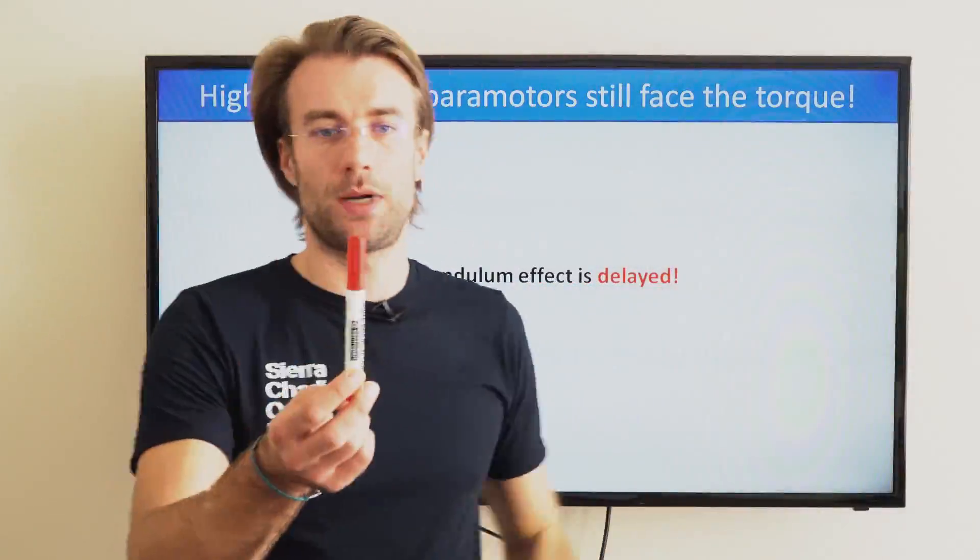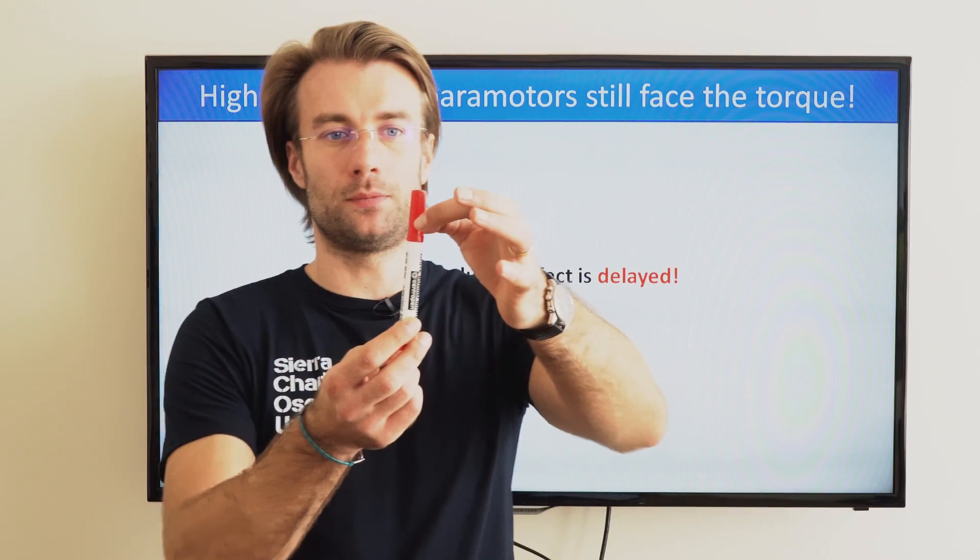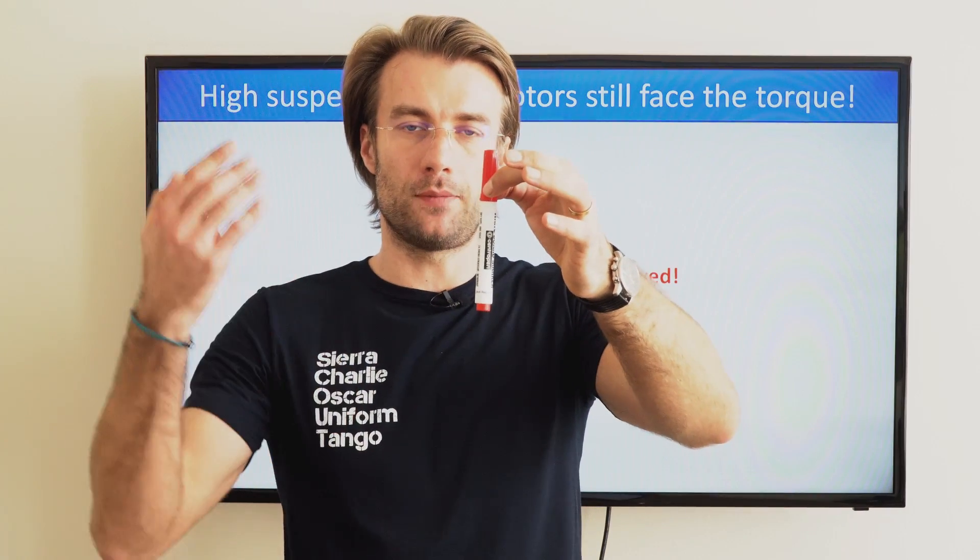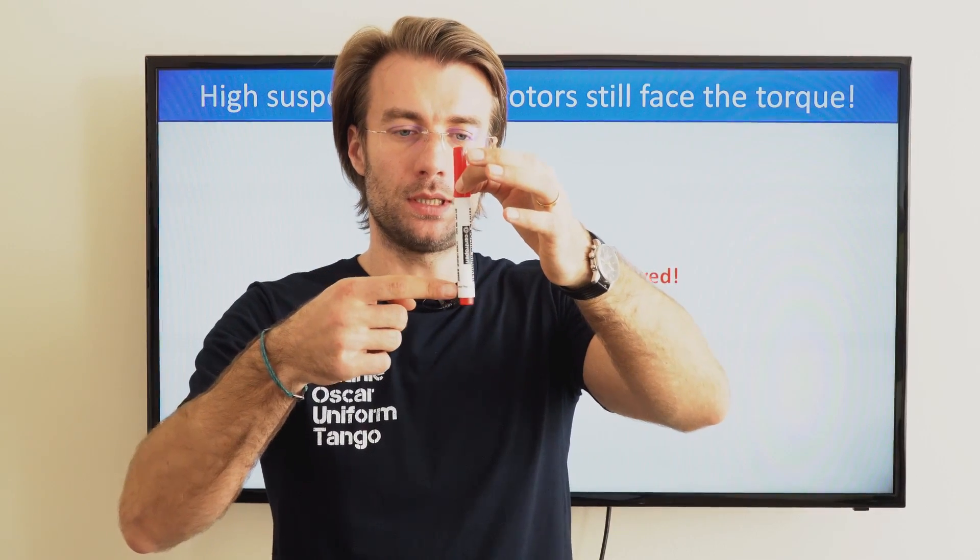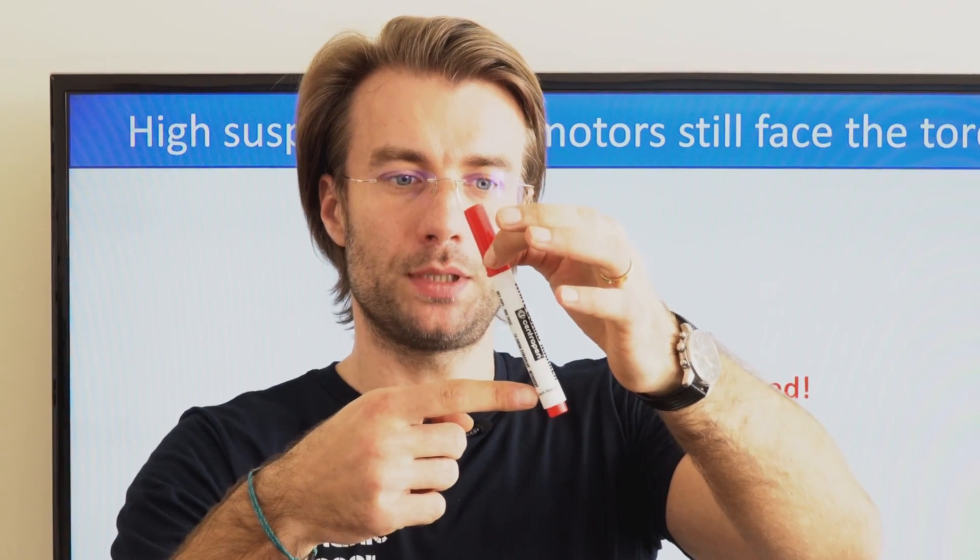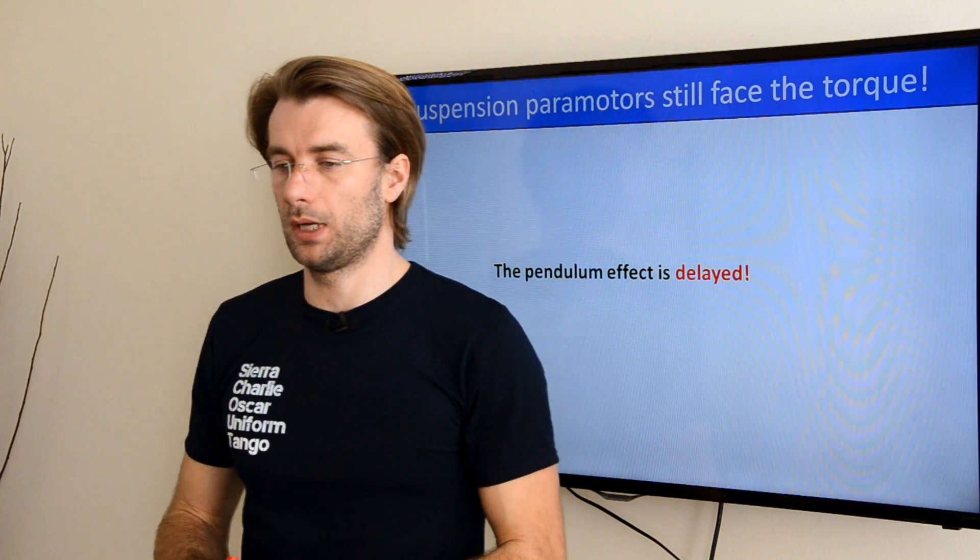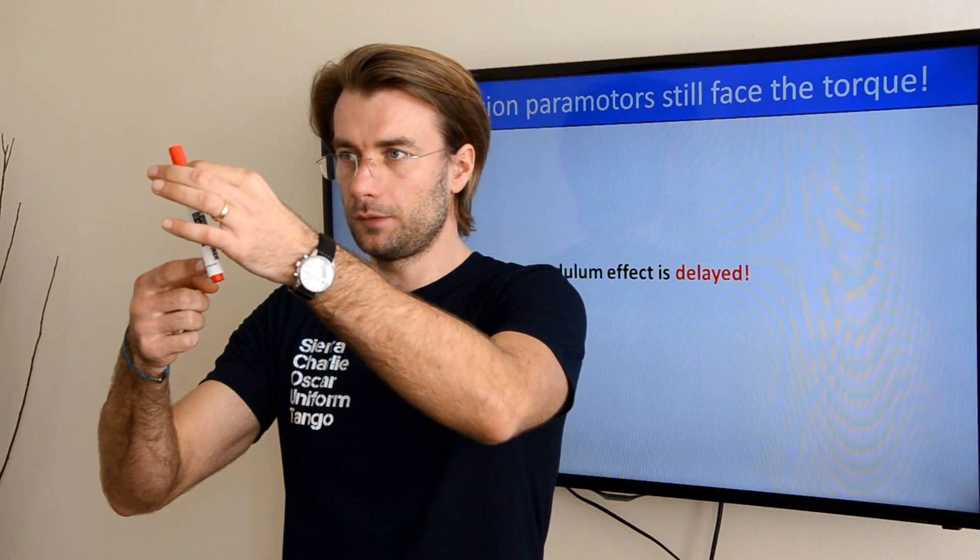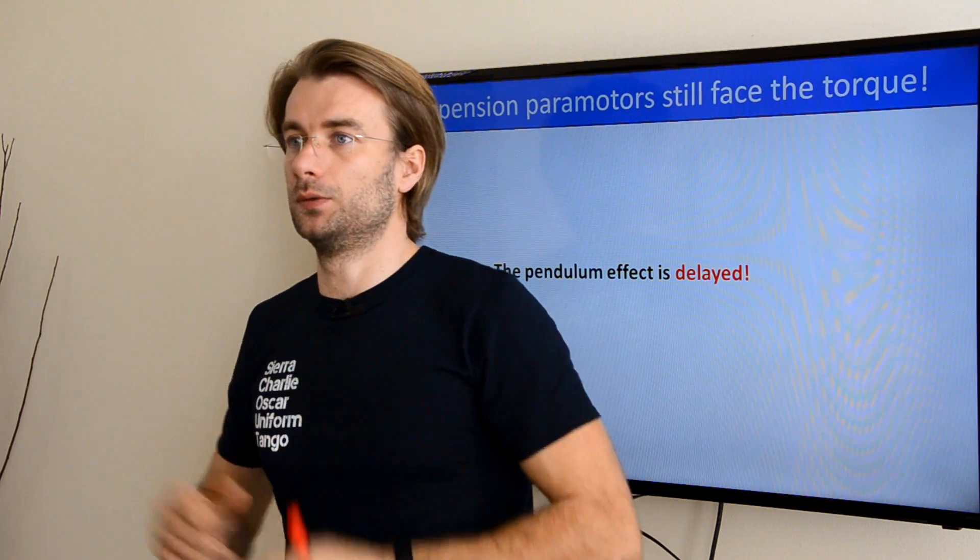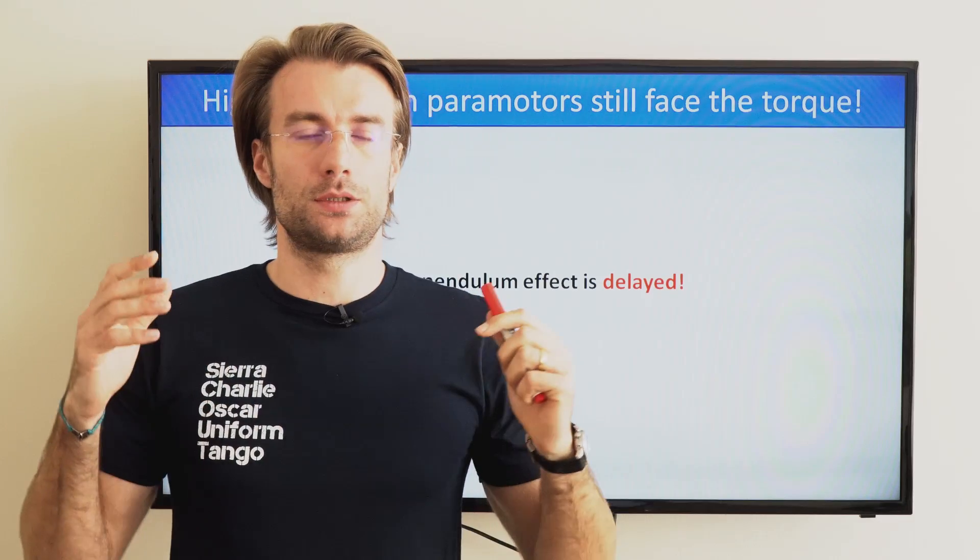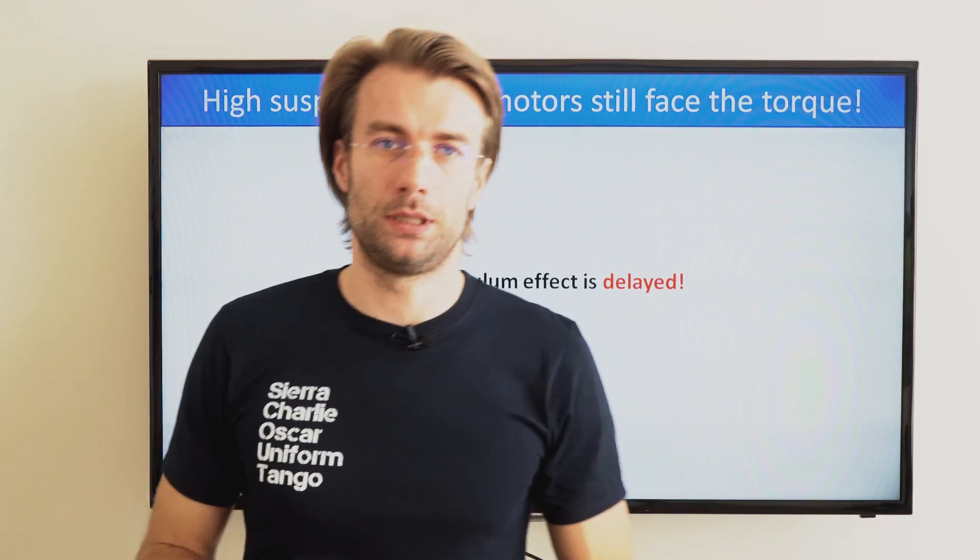So take this as a paramotor with high suspension, I will suspend it at the top. Now I apply torque that will rotate the paramotor sideways and at a certain moment the pendulum effect will stop the rotation and the paramotor will remain in this position when power is applied. This means you are still facing torque, you're still weight shifting to one side and you need to compensate the remaining torque.